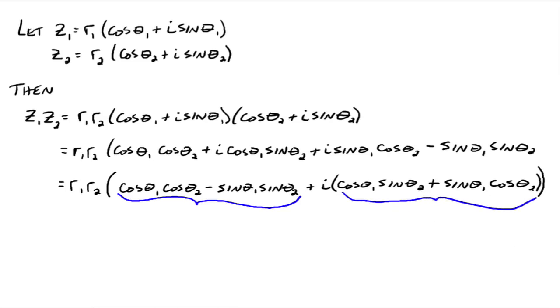When we do that, we can rewrite cosine theta 1 cosine theta 2 minus sine theta 1 sine theta 2 from a trig identity as cosine of theta 1 plus theta 2. And then this part right here goes to the sine of theta 1 plus theta 2. So to take two complex numbers that are written in polar form and multiply them together, it's as simple as doing the r1 times r2. Take each modulus, multiply them together, and then take the cosine of the sum of the two angles plus i sine of the sum of the two angles.